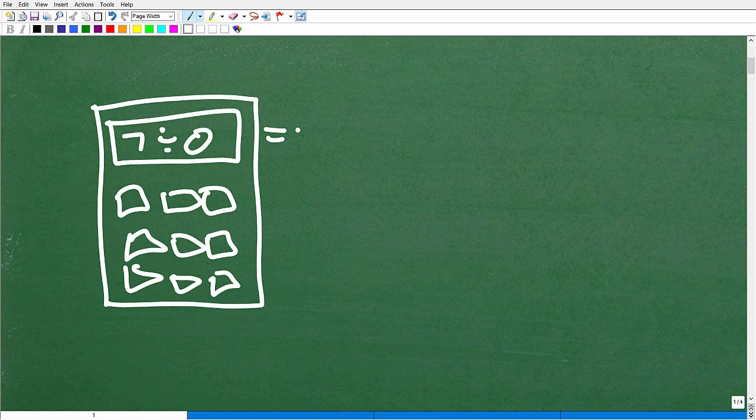All right, so we're going to go 7 divided by 0 and you're going to hit equal. All right, so what happened when you did that? Now, most of you probably saw something like this: error, right?